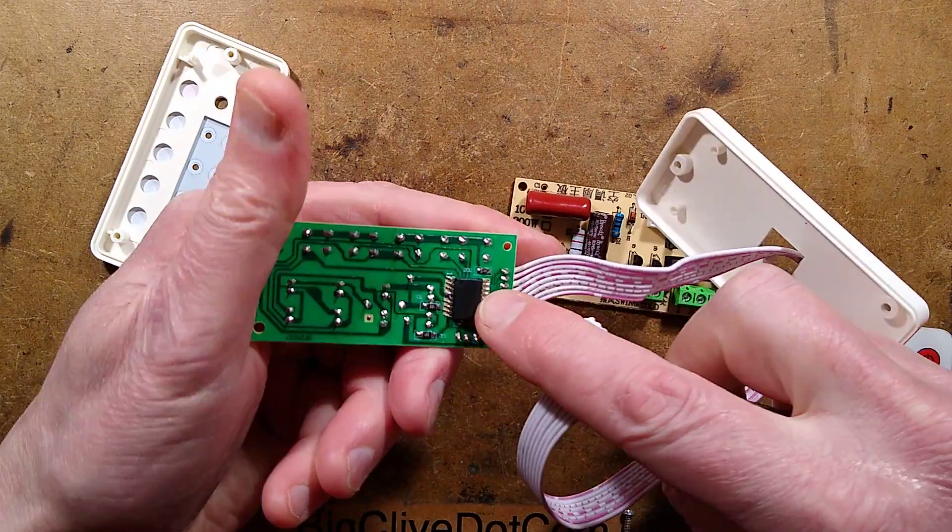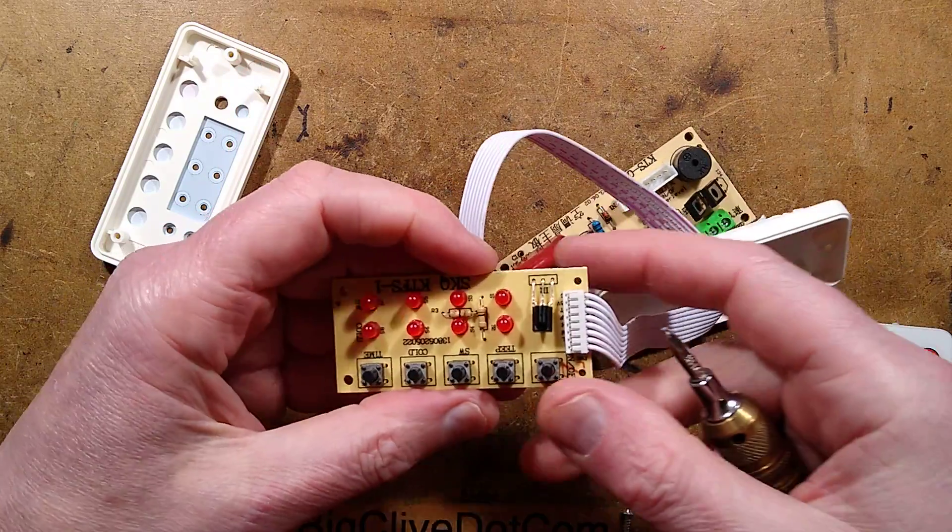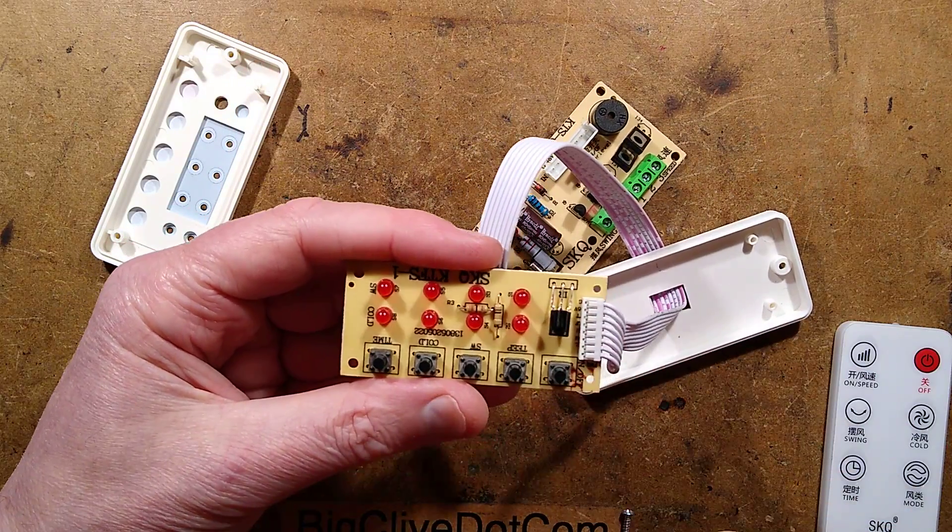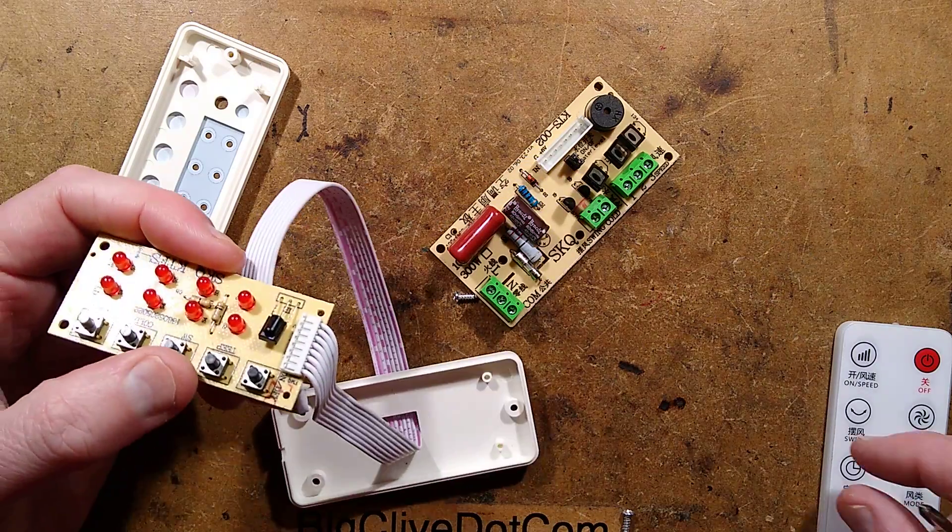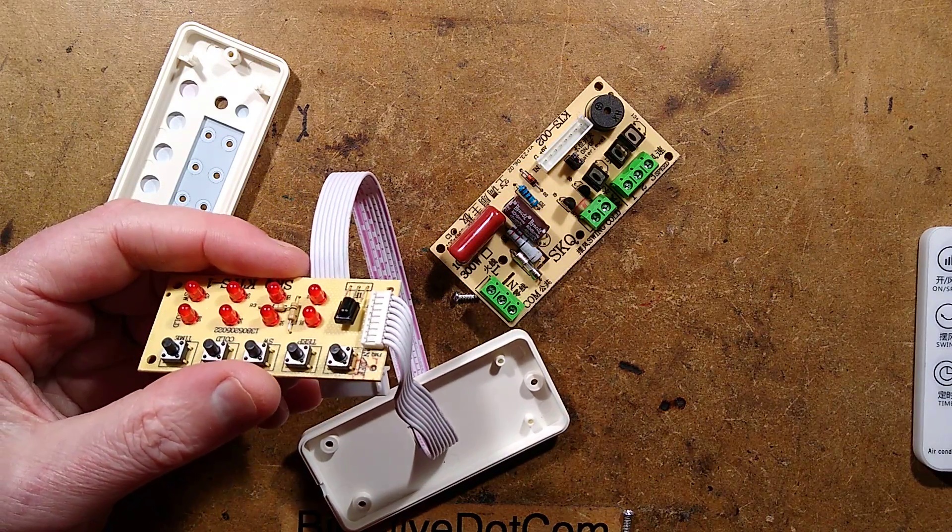There is the magic chip with no number on it - there's a surprise. We have the clicky buttons, the infrared receiver, and the LEDs. I'm going to take some pictures of these and then we'll reverse engineer it.